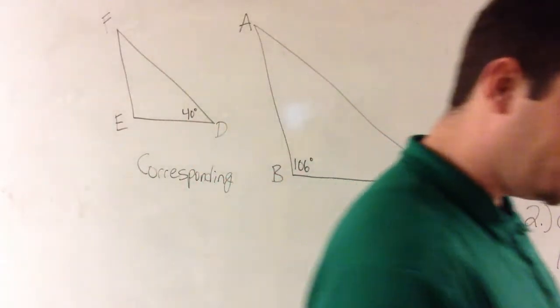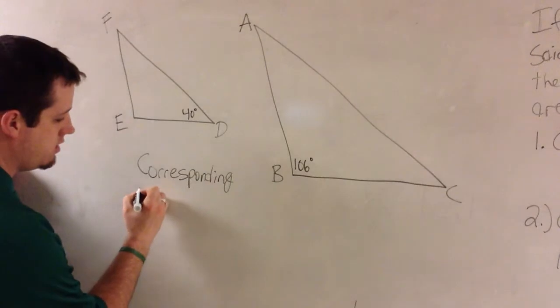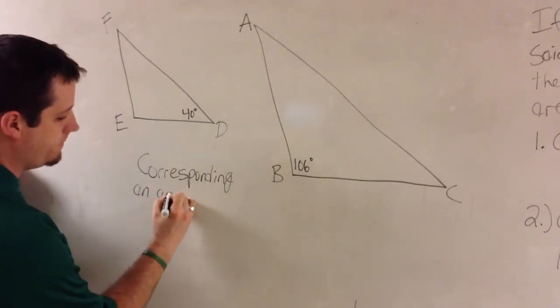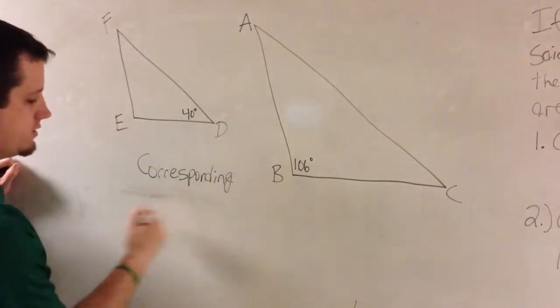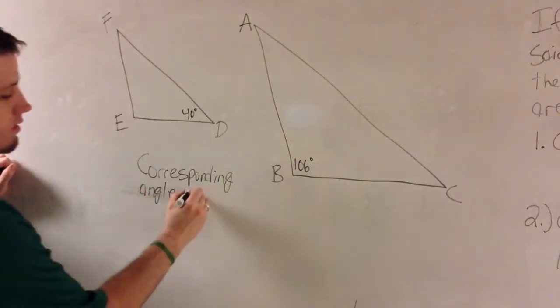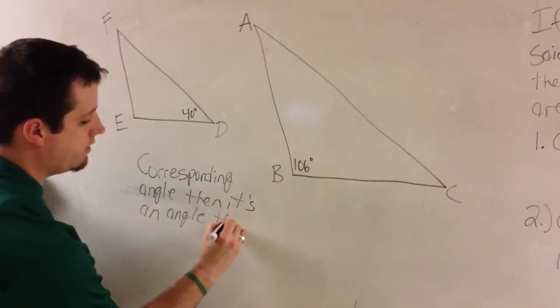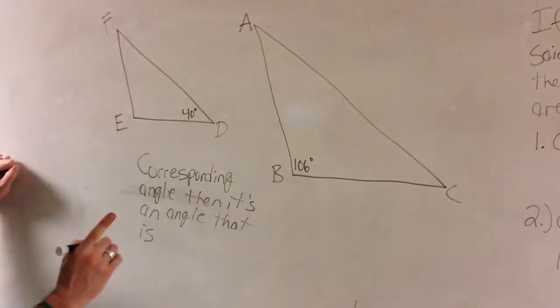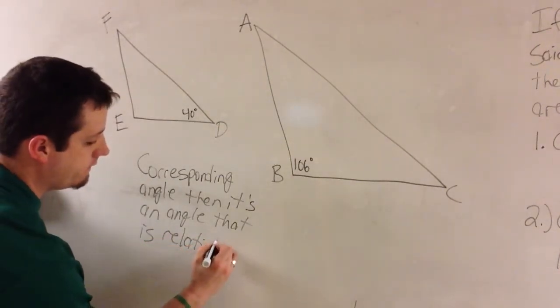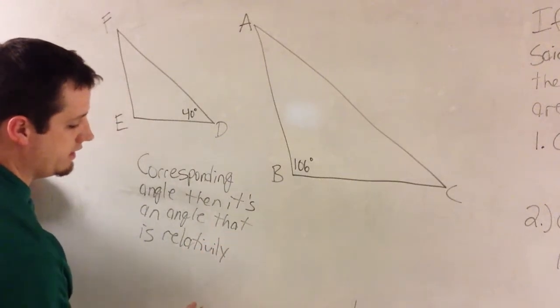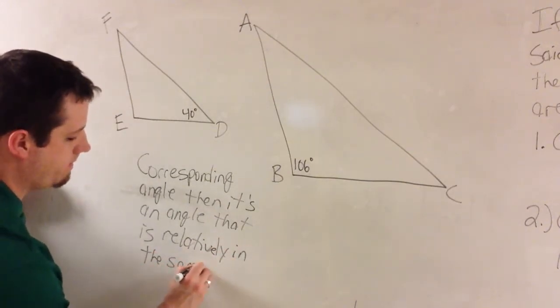Alright, and a very simple definition for that is an angle that, let's put it to you like this. If it's a corresponding angle, then it's an angle that is, alright, and here's the important part. Corresponding angle. Then it's an angle that is relatively, relatively in the same location.